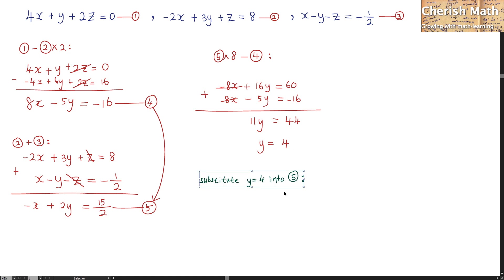Now, for the next step, I will have to substitute y equal to 4 into the fifth equation. That is going to be negative x plus 2 and the value of y that I am going to substitute is 4, is equal 15 over 2. Now the value of x here is going to be 8 minus 15 over 2. Value of x is in fact 1 and we found the second value.